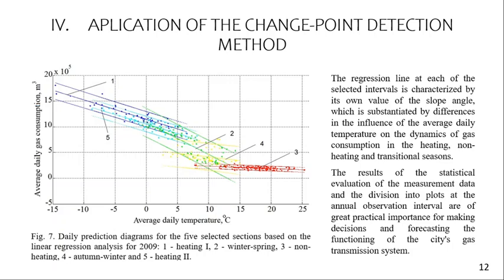The results of the statistical evaluation of the moment data and division into plots at the annual observation interval are of great practical importance for making decisions and forecasting the functioning of the city gas transmission system for each period.